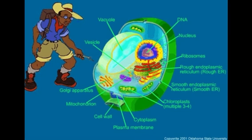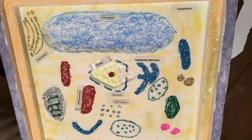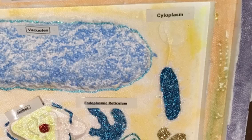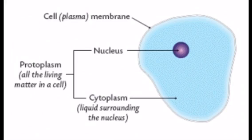Finally, there is the cytoplasm, which is a gel-like fluid found throughout the cell, similar to undeveloped open spaces around the city.